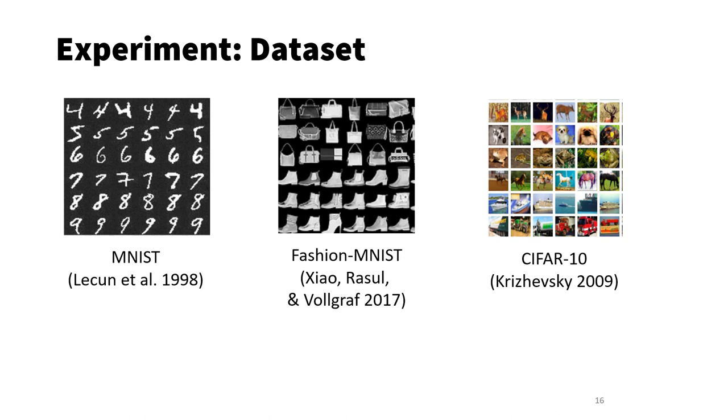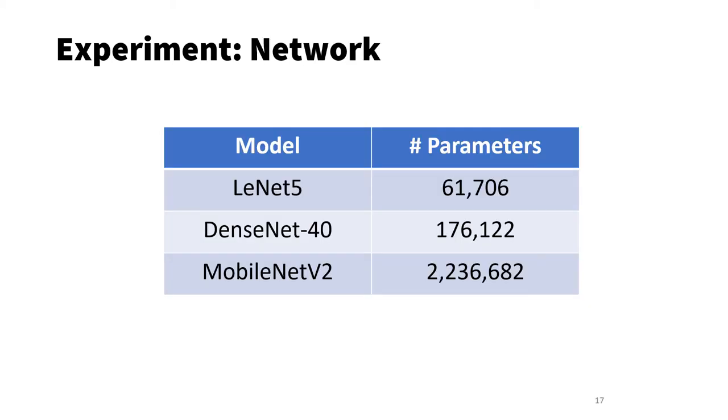In the experiments, we use three image classification datasets. The first is MNIST, which is for classification of grayscale images into 10 digits. Fashion-MNIST, which is for classification of grayscale images into 10 different fashion items. And CIFAR-10, which is for classification of color images into 10 classes. We use three different networks in the experiments. LeNet-5, DenseNet-40, and MobileNet-V2. The three networks have 61,000, 176,000, and more than 2 million parameters, respectively.